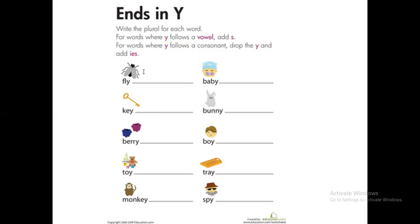Let's try to solve these words. If we have more than one fly, flight, we have 'l' before the 'y', and the 'l' is consonant, so we'll change the 'y' to 'i' and add 'es'. What about keys? We have a vowel before the 'y', so just add 's'. Berry, we have a consonant before the 'y', so 'i', 'e', 's'. Toy, we have a vowel before the 'y', so add 's'. Monkey, we have a vowel before the 'y', so add 's' without changing anything. Baby, we have a consonant before the 'y', so change the 'y' to 'i' then add 'es'.